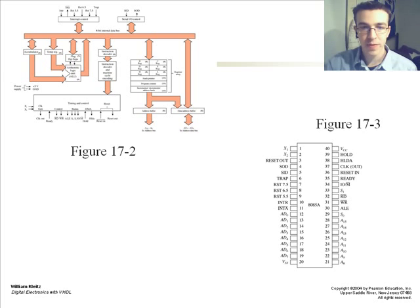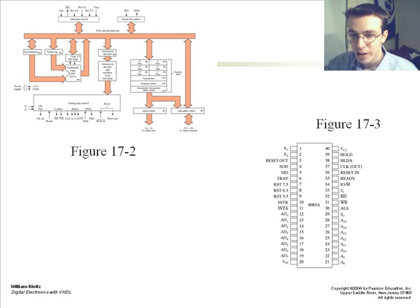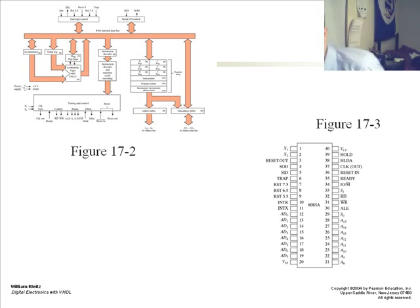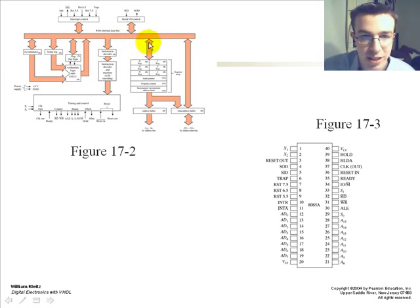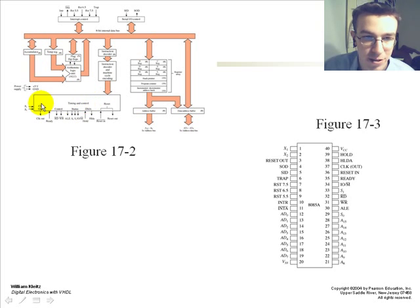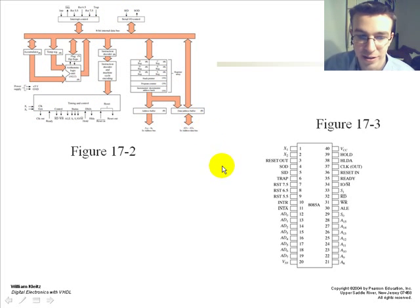This is an example of the 8085, the 40-pin chip, and its bus system with the yellow bus lines, and its registers along with its control, outputs, and input devices.